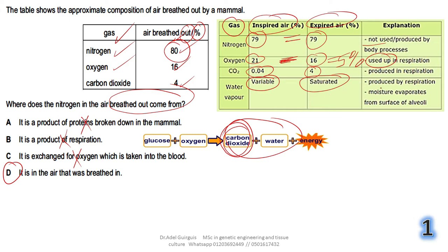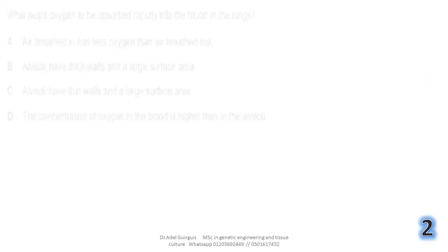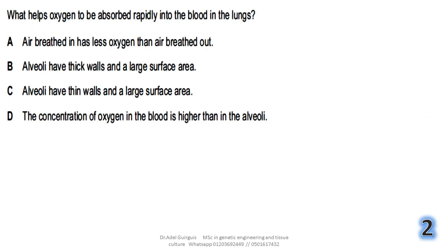Water vapor is higher in expired air because it is produced by respiration and also because moisture evaporates from the surface of the alveoli. Question 2: what helps oxygen to be absorbed rapidly into the blood in the lungs?